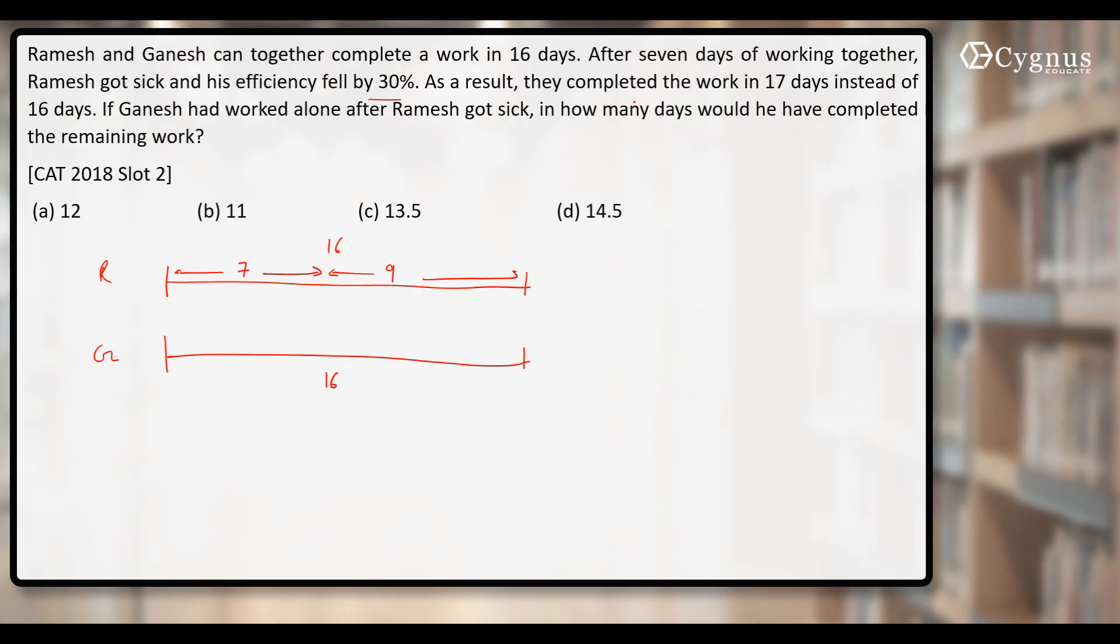As a result, they completed the work in 17 days instead of 16 days. That means they'll have to work for one extra day. This is that one extra day. Ganesh will also work for one extra day.